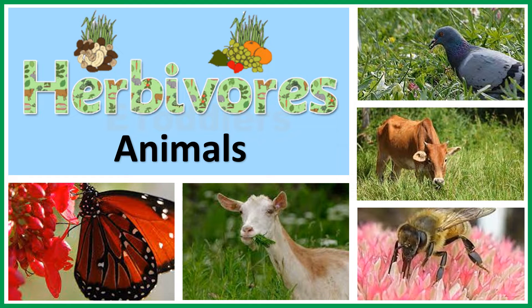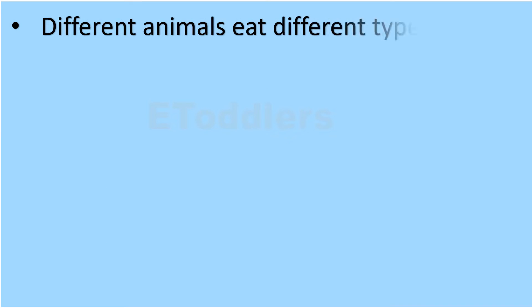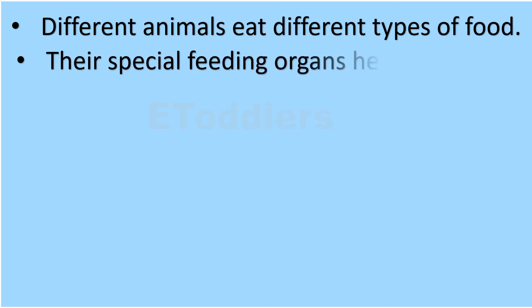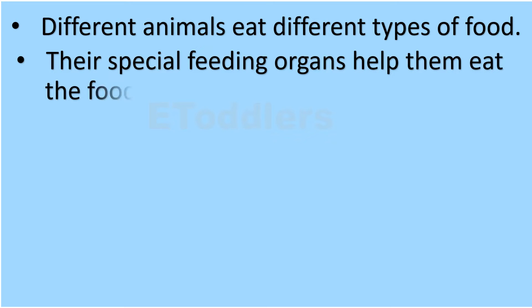Let's learn about herbivores' animals. Different animals eat different types of food. Their special feeding organs help them eat the food of their choice.